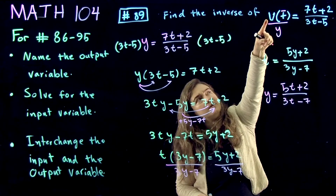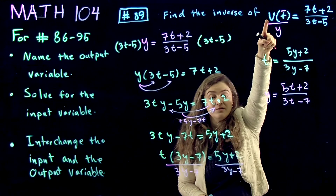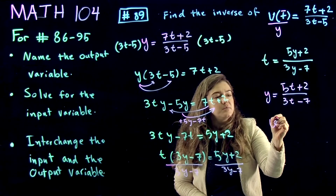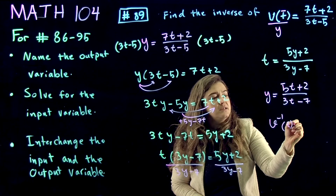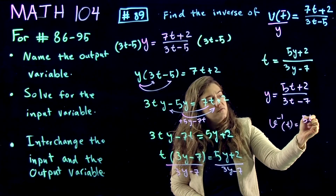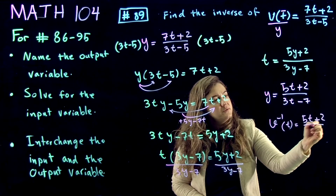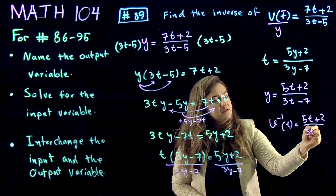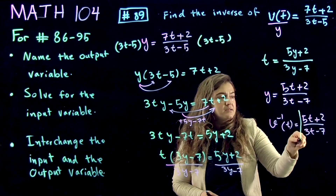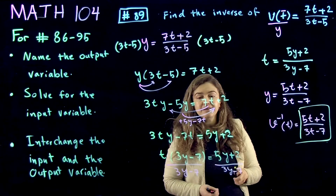What was the name of the function? V. This means V inverse of t is equal to 5t plus 2 divided by 3t minus 7. This is what you enter in your gateway exam, and we're done.